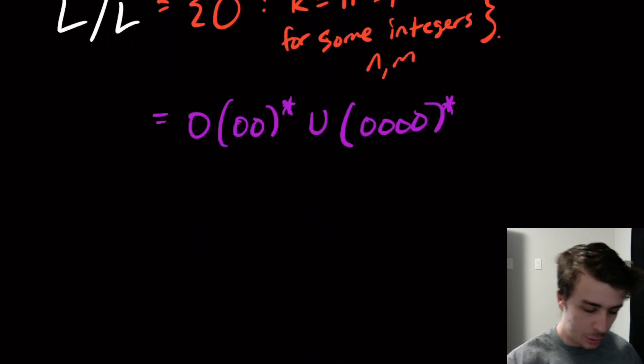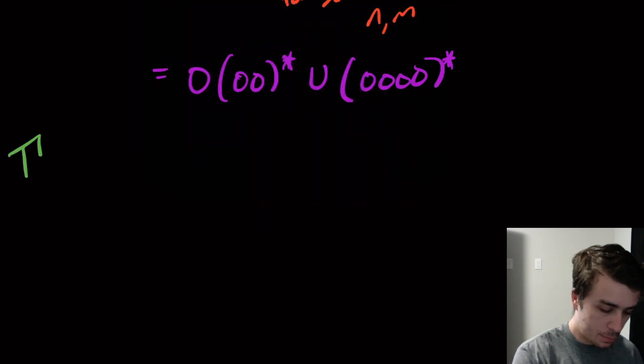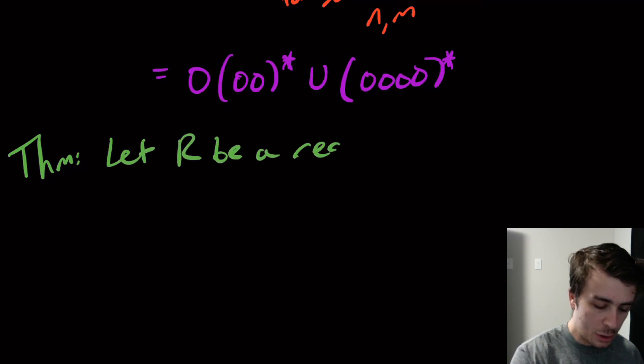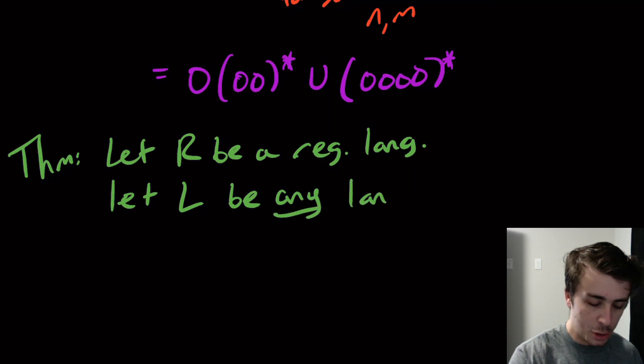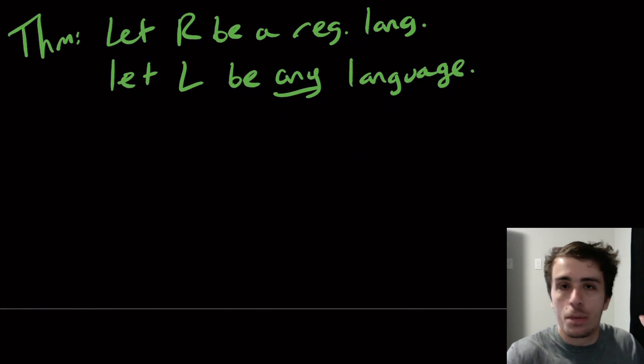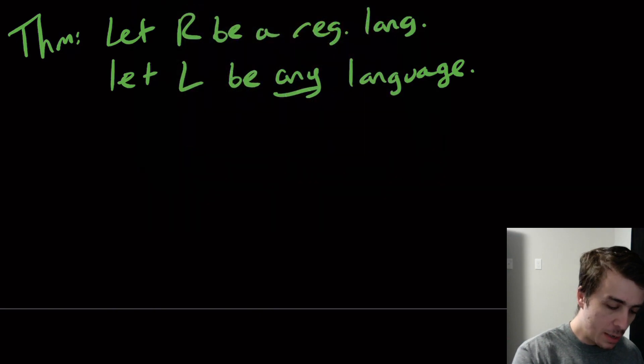I want to prove something for you right here. Let R be a regular language, so just any old regular language, and let L be any language, not even regular, not even context free. It could be any language at all.